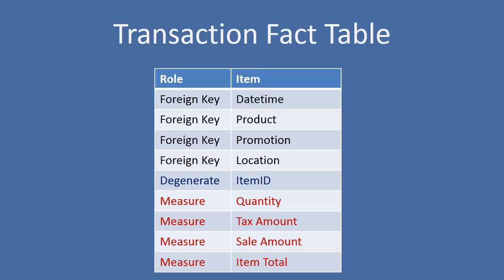This is not the product ID, but this is actually the transaction item ID. Then you have our measures: how many were sold, the tax amount, the sale amount, and the item total.